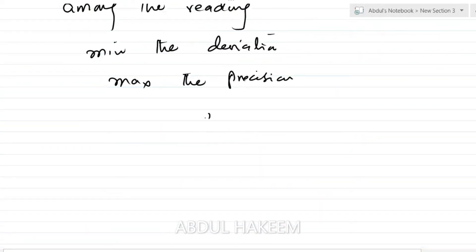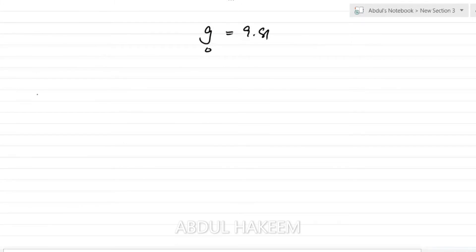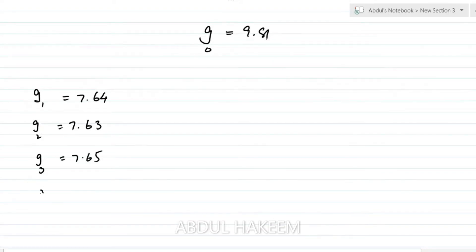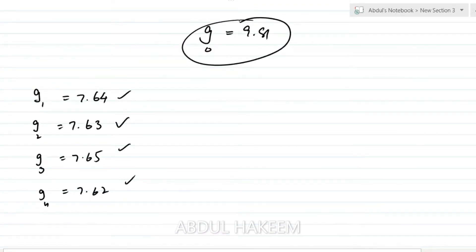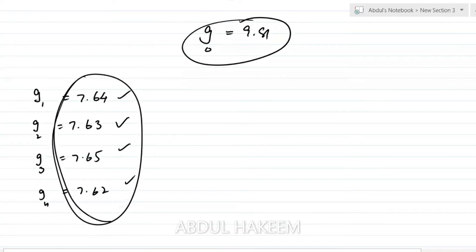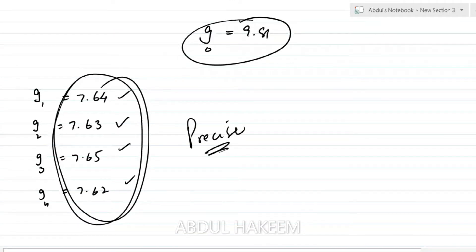For example, the true value of g is again 9.81, and different measured values are: G1 = 7.64, G2 = 7.63, G3 = 7.65, G4 = 7.62. These readings are far from the true value, so they are not accurate. But all are very close to each other, so they are precise.